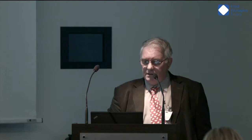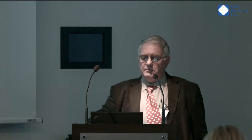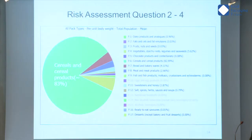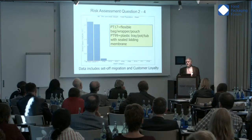The toxicologically acceptable limit is 10 micrograms per kilo body weight. Therefore, there could be an unacceptable risk. What is driving this risk? We can look at FACET and again it will show us that it's flexible bags, wrappers, pouches, and cereals — here is the main contributor to the exposure. It's the flexible wrappers, bags, etc., which is not surprising when you consider the types of foodstuff we're talking about.